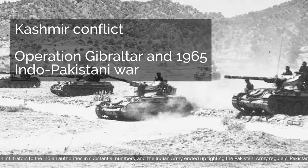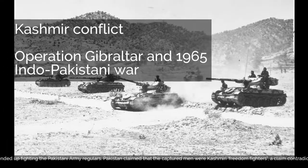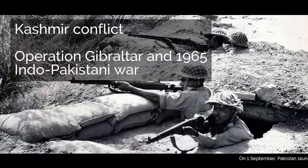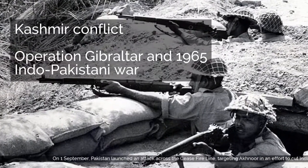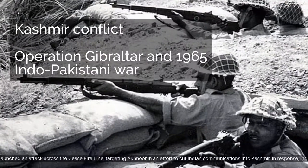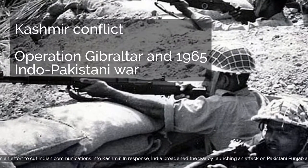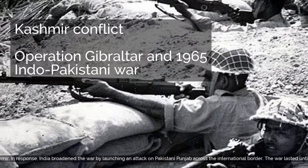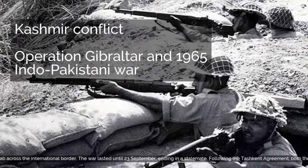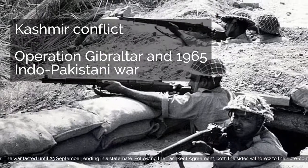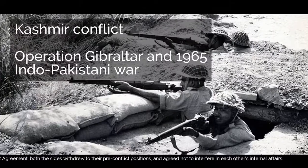Pakistan claimed that the captured men were Kashmiri freedom fighters, a claim contradicted by the international media. On 1 September, Pakistan launched an attack across the ceasefire line, targeting Akhnur in an effort to cut Indian communications into Kashmir. In response, India broadened the war by launching an attack on Pakistani Punjab across the international border. The war lasted until 23 September, ending in a stalemate. Following the Tashkent Agreement, both sides withdrew to their pre-conflict positions and agreed not to interfere in each other's internal affairs.